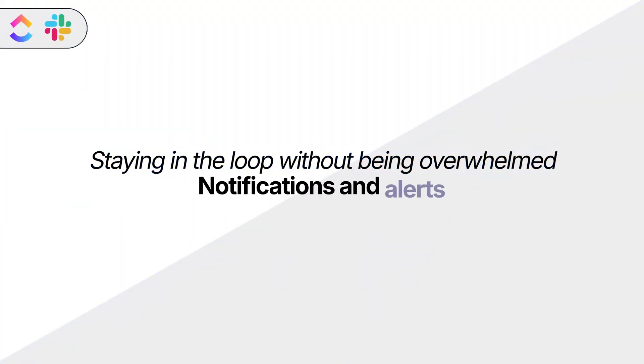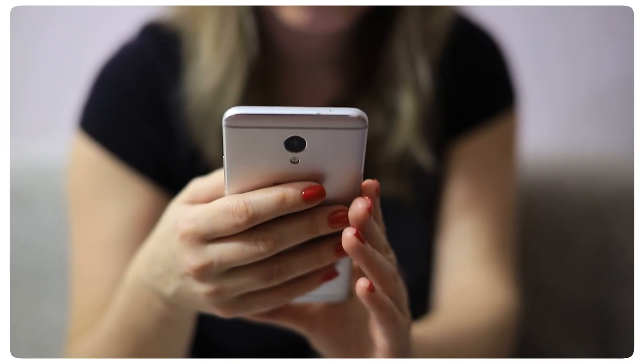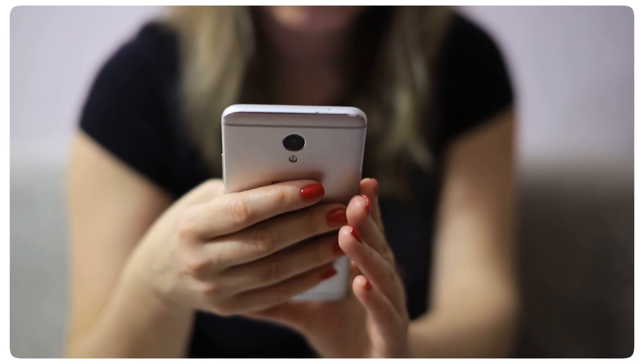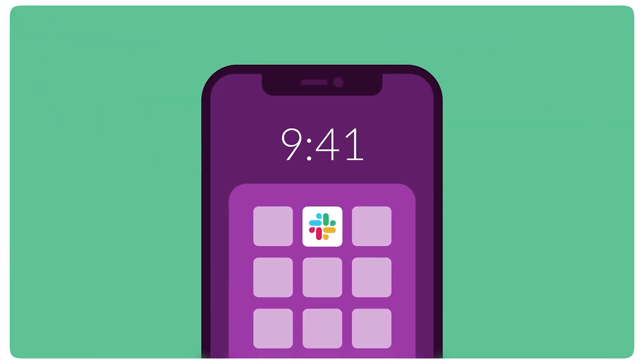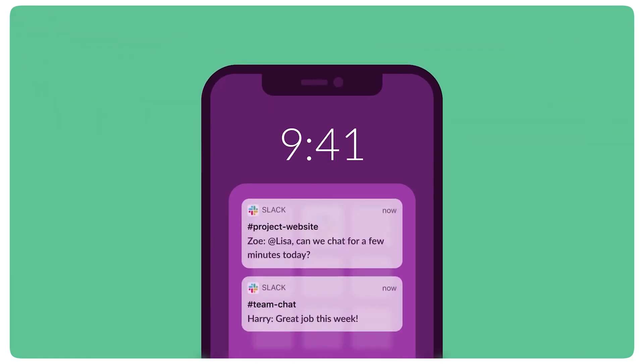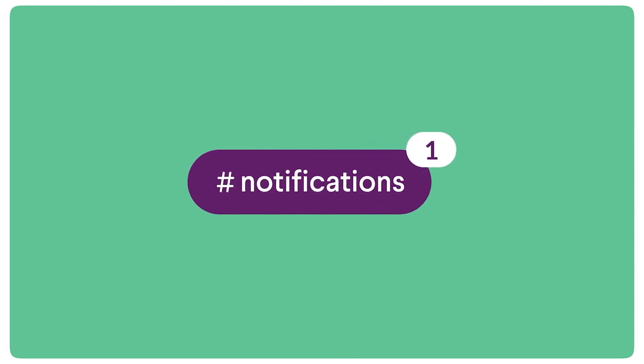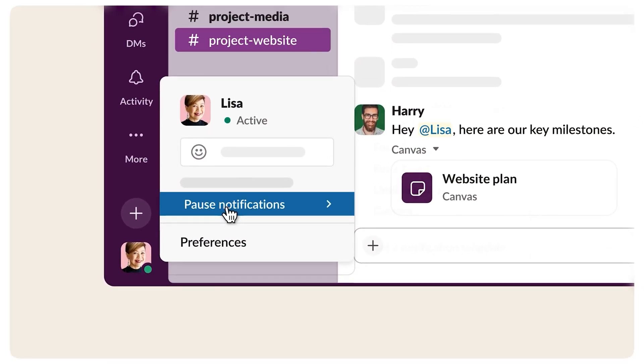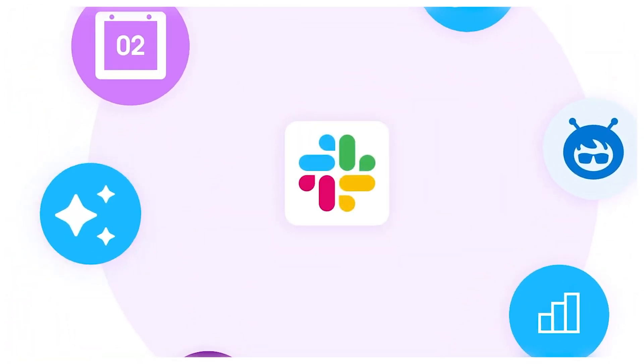Let's move on to notifications and alerts, because staying in the loop without being overwhelmed is a real challenge. ClickUp handles notifications differently — since it's more about tasks than conversation, you mostly get alerts when something changes in a project, like a deadline update or a comment on a task you're assigned to. That means fewer distractions, but some users report occasional delays or missed alerts, which isn't ideal when timing matters. Slack, on the other hand, gives you instant notifications — you'll know right away if someone tags you, messages you, or reacts to something you said. You can tweak settings per channel, mute conversations, and set do-not-disturb hours. But even with those controls, it can feel like too much, especially if your team is super active. You might find yourself checking Slack every 5 minutes, which isn't exactly productive.